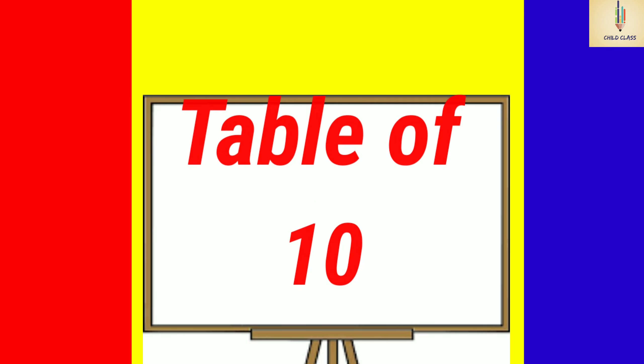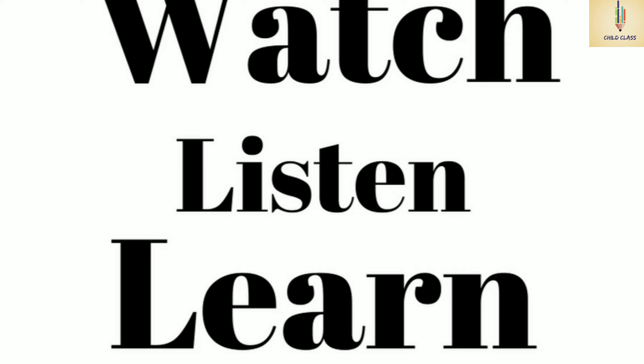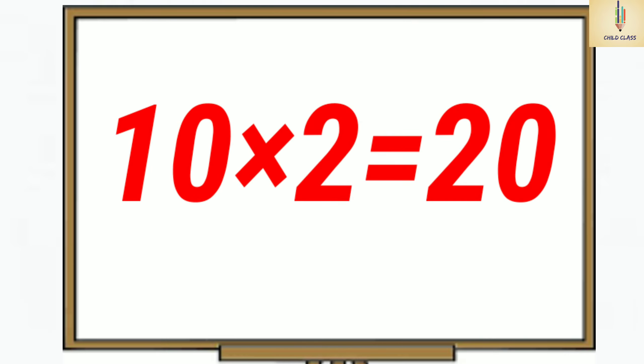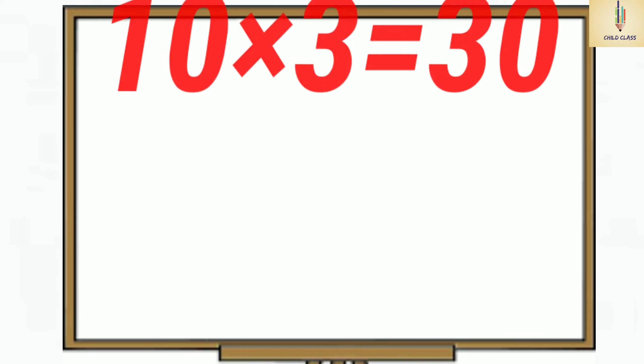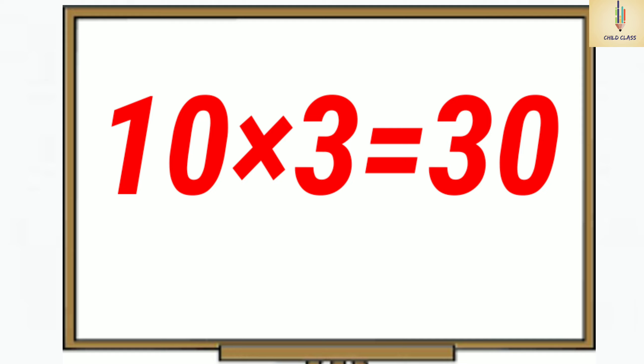Table of Ten. Watch, listen and learn. Ten ones are ten. Ten twos are twenty. Ten threes are thirty.